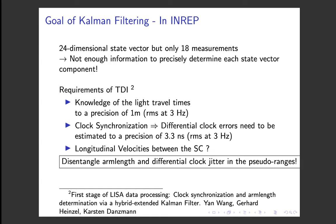So, now I can come back to the goal of Kalman filtering in INRIP. We have a 24-dimensional state vector but only 18 measurements, so we don't have enough information to precisely determine each state vector component. But we don't need to know each state vector component precisely. What we need to know is the light-travel time, and we need to have synchronized clocks. So we need to disentangle the arm lengths and the differential clock jitters in the pseudo ranges, and that can be done by a Kalman filter. It was already shown by a former PhD student at the Albert Einstein Institute.